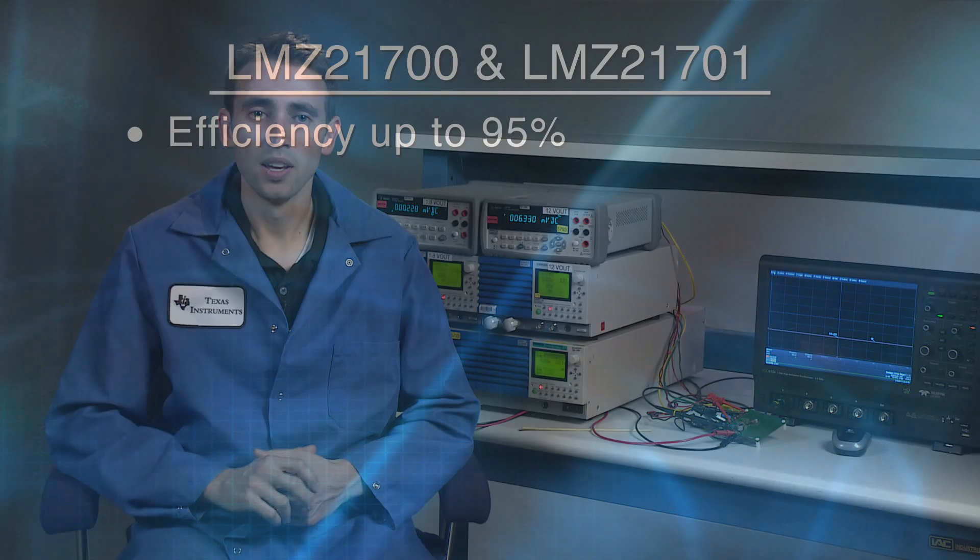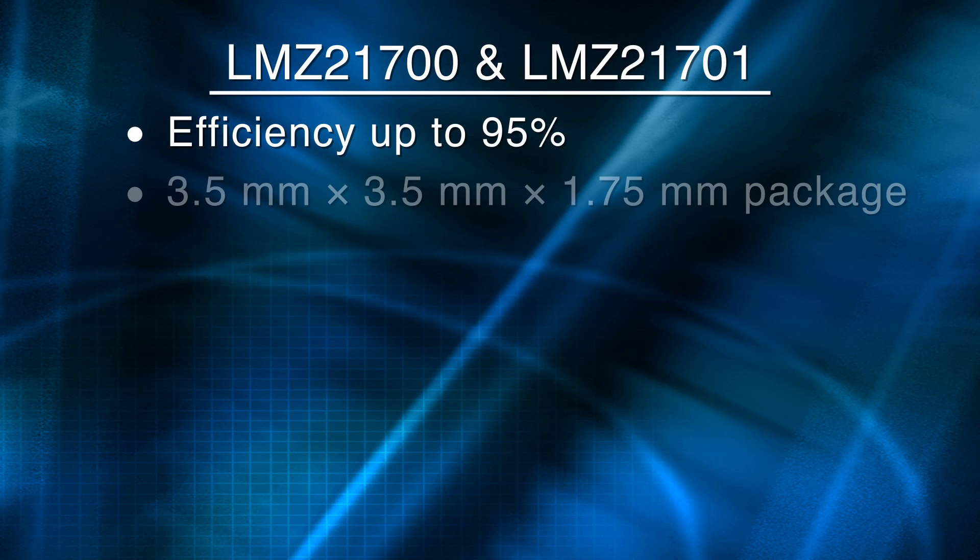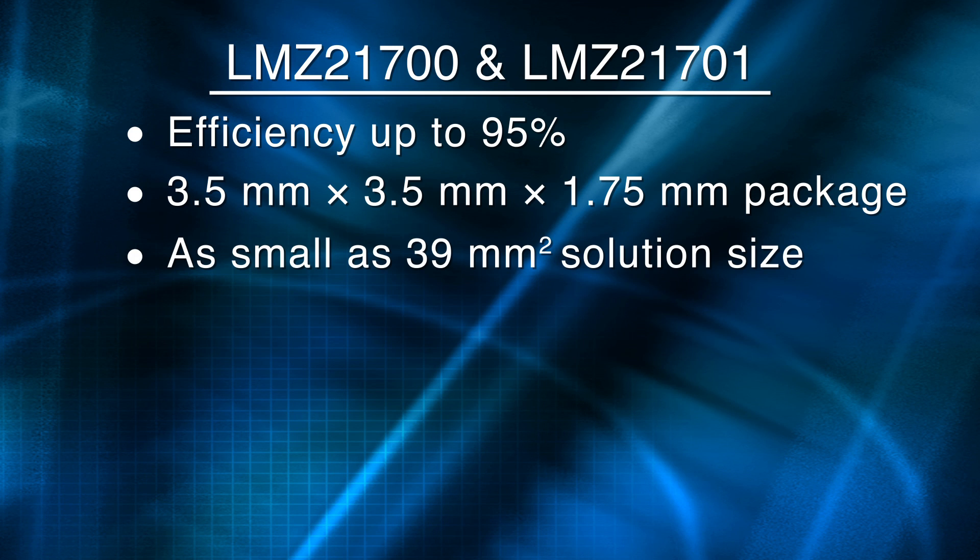The LMZ21700 and 21701 Simple Switcher nano modules are also easy to use step down DC-DC converters that give you exceptional efficiency and space constraint applications. You only need an input capacitor, an output capacitor, a soft start cap, and two resistors for their basic operation.